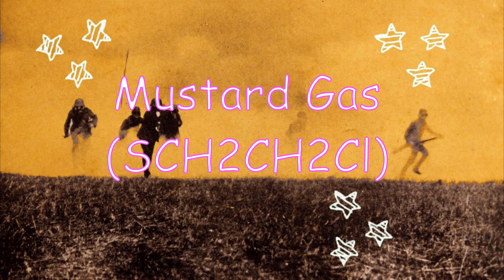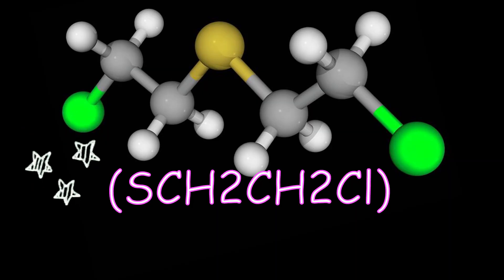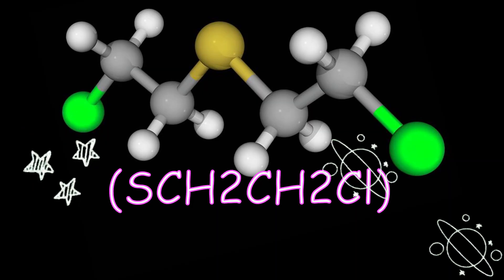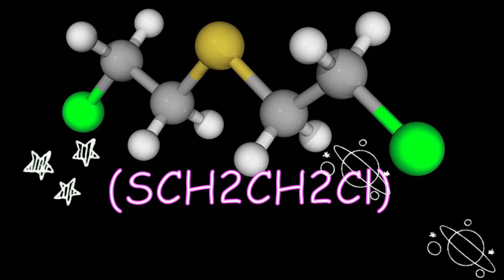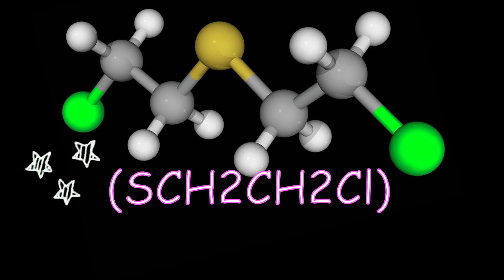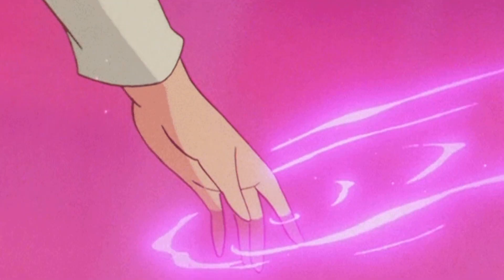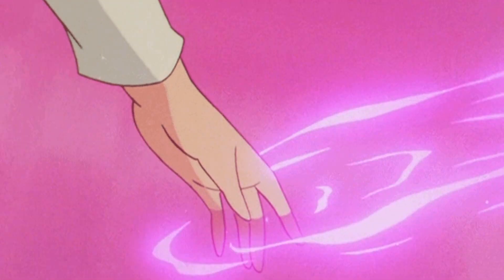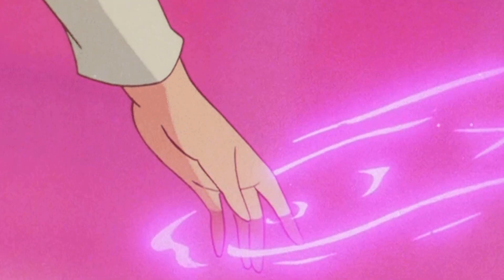Mustard gas, or sulfur mustard, is any of several chemical compounds that contain the chemical structure CH2CH2CL. The name mustard gas is technically incorrect — the substances, when dispersed, are often not gases but a fine mist of liquid droplets.